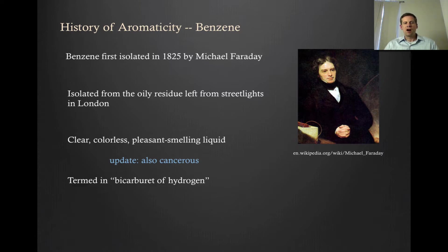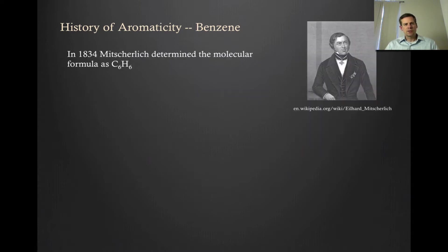He termed it Bicarbure of Hydrogen, but the name obviously didn't stick. It wasn't until almost ten years later that Miesterlich first determined the molecular formula of benzene — not the structure, but just the formula — as being C6H6.